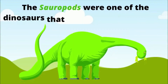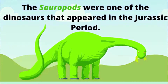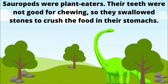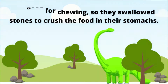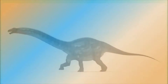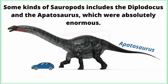The sauropods were one of the dinosaurs that appeared in the Jurassic period. Sauropods were plant-eaters. Their teeth were not good for chewing, so they swallowed stones to crush the food in their stomachs. They are the biggest land animals that have ever lived. Some kinds of sauropods include the Diplodocus and the Apatosaurus, which were absolutely enormous.